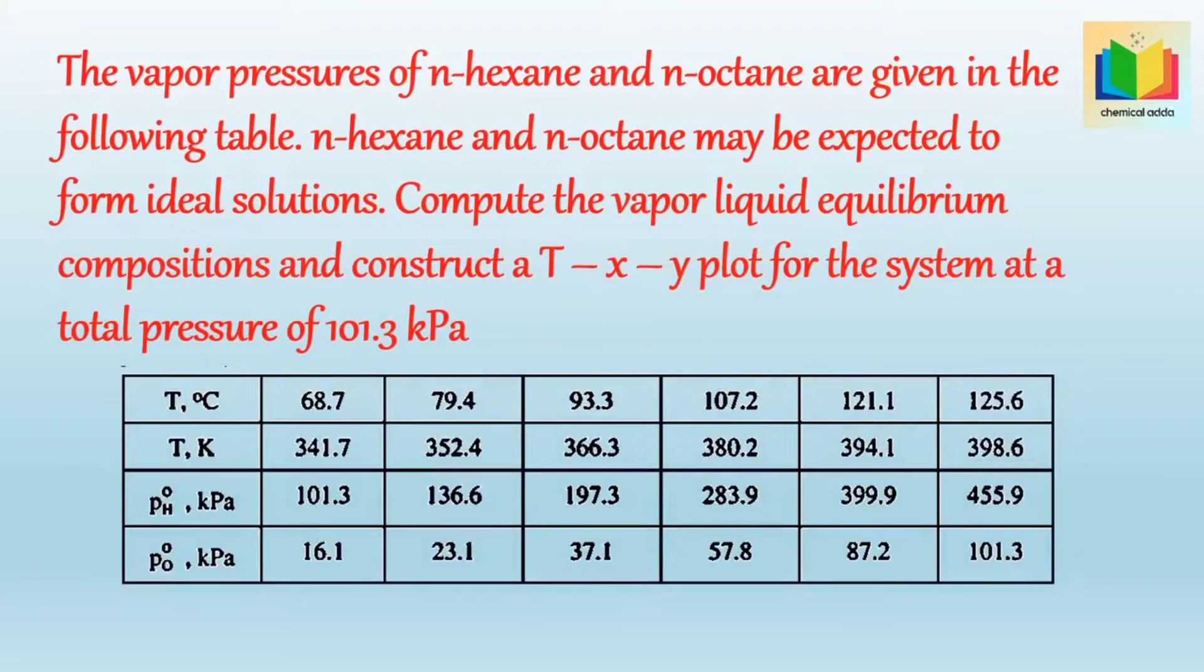The vapor pressures of N-hexane and N-octane are given in the following table. N-hexane and N-octane may be expected to form ideal solutions. Compute the vapor liquid equilibrium compositions and construct a TXY plot for the system at a total pressure of 101.3 kilopascals.